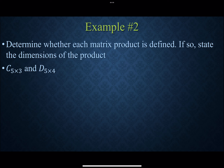Something like this one, where we have a 5 by 3 and then a 5 by 4 — that would not work. The inner numbers, 3 and 5, are not the same, so this would be an undefined matrix product.